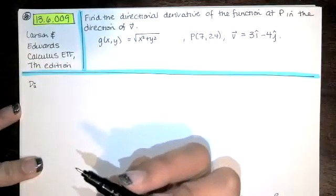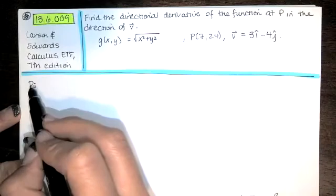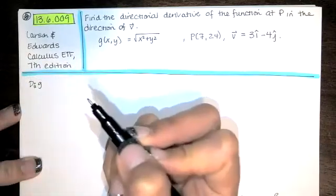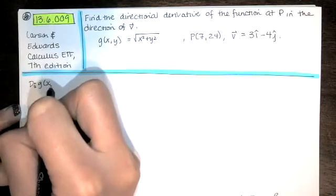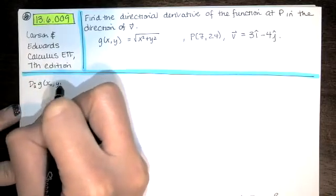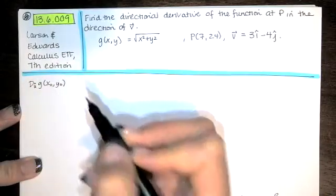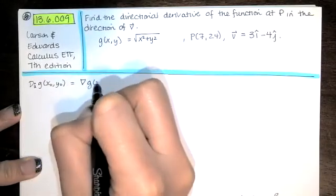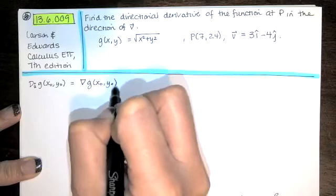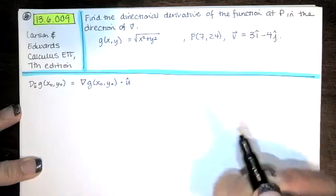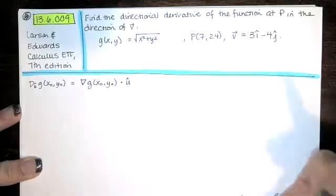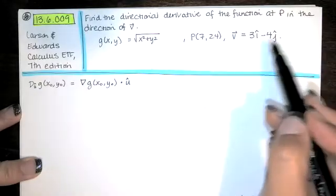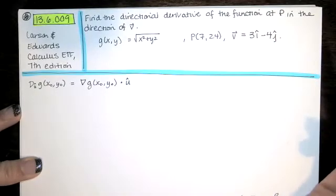The directional derivative is denoted D sub U hat of our function — in this case, G — at a particular point X-naught, Y-naught. That turns out to be the gradient of G at X-naught, Y-naught dotted with the unit vector in the direction that we're given. Since we're not given a unit vector, we have to calculate the unit vector in the direction of V.